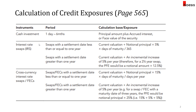Under interest rate swaps, we have two types: swaps with a settlement date less than or equal to one year, which also covers interest rate forward contracts or FRAs (forward rate agreements). For cash investments — anything from one day to six months — the credit exposure is the principal amount plus the interest, or we can take the face value of the security as the exposure.